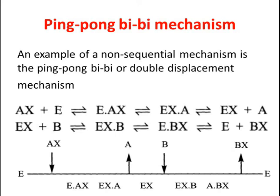An intramolecular reorganization takes place, the bond EX being formed and the XA bond being broken. The first product A then leaves before the second substrate arrives.